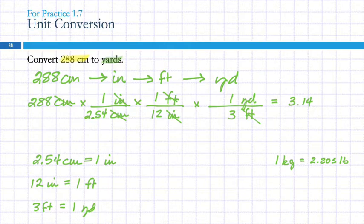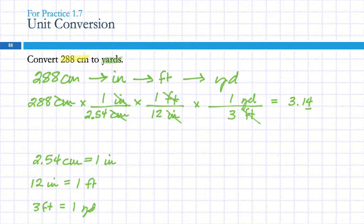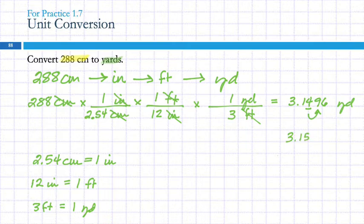So as I write this number down — 3.14 is the third digit, that's my last sig fig — the answer rounds to 3.15 yards.